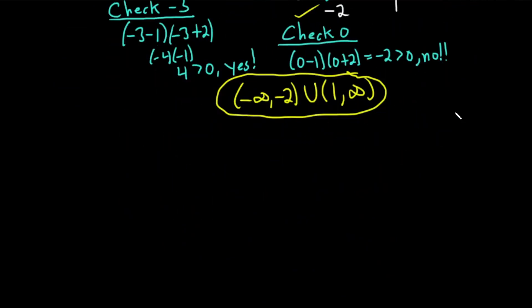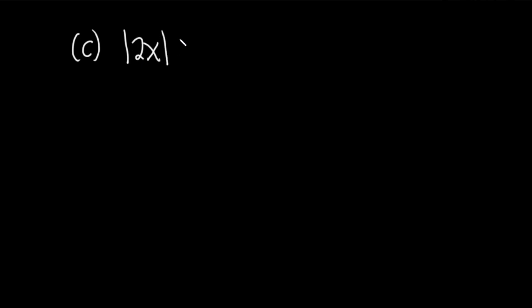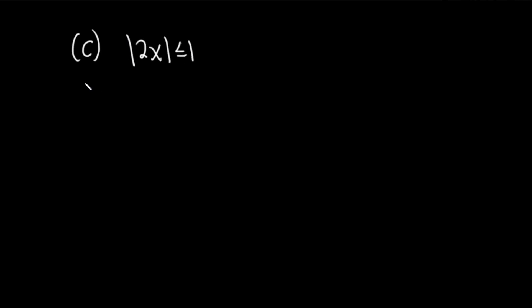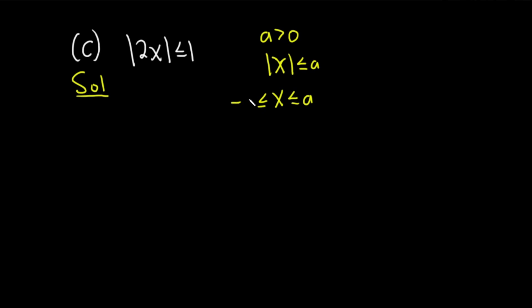Let's do another example — something super important to know. In part C, let's solve an absolute value inequality: the absolute value of 2x less than or equal to 1. There's a formula we can use. If a is positive, whenever you have the absolute value of x less than or equal to a, you drop the absolute value and get negative a less than or equal to x less than or equal to a. The reasoning: the absolute value of x is the distance between x and zero, and if that distance is less than or equal to a, then x must be between negative a and a.